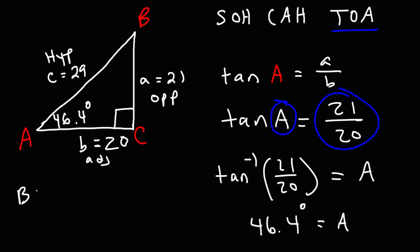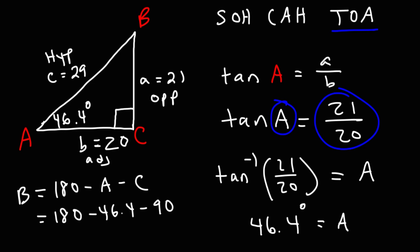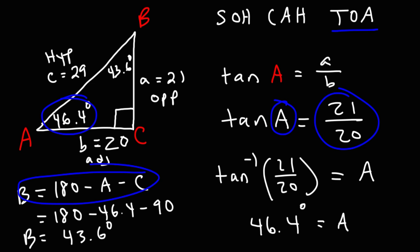To find angle B: since all three angles must add up to 180, angle B = 180 minus 46.4 minus 90, which gives 43.6 degrees. For a right triangle you can simply do 90 minus 46.4 for a faster calculation. That's it for this example — now you know how to solve right triangles. Don't forget to subscribe and hit the notification bell. Thanks for watching.